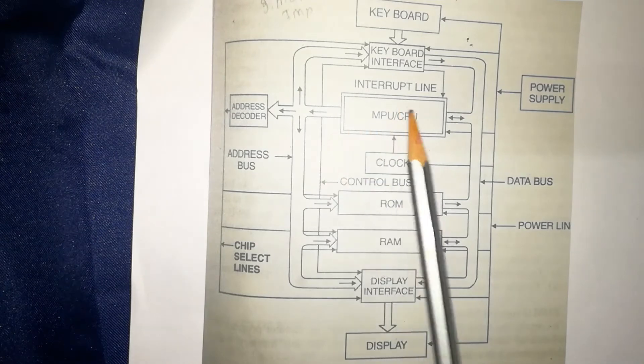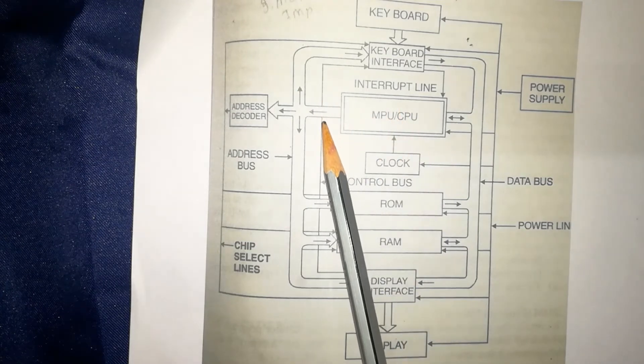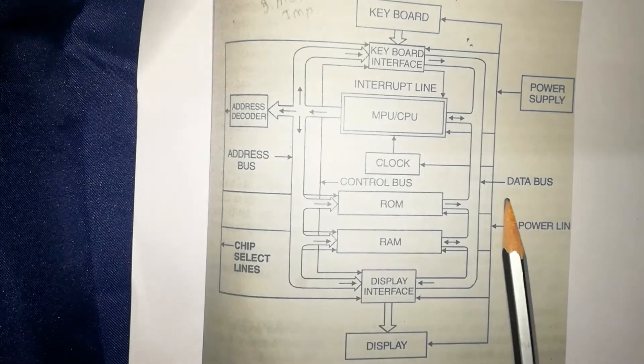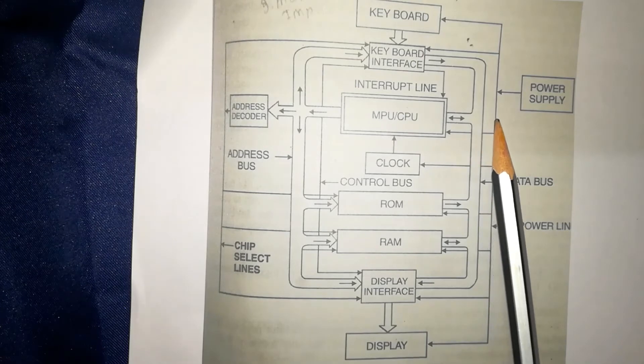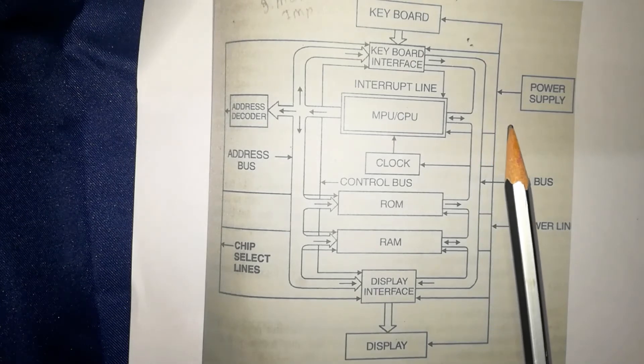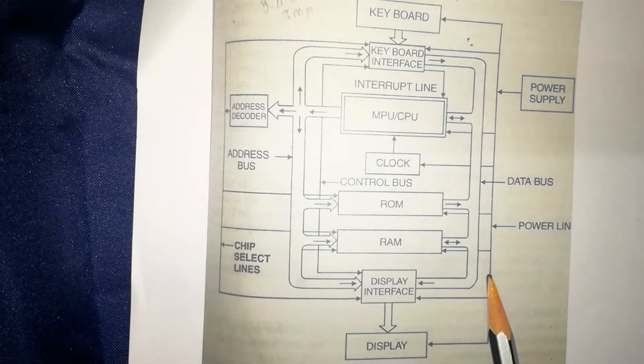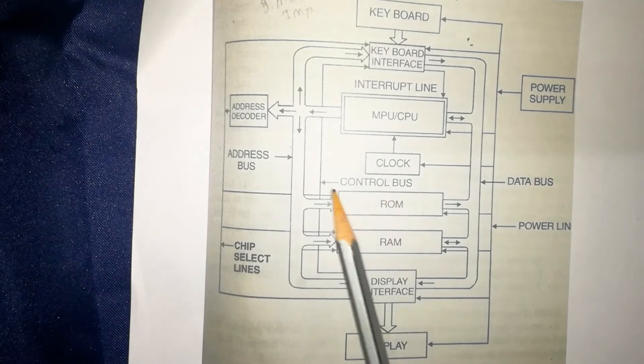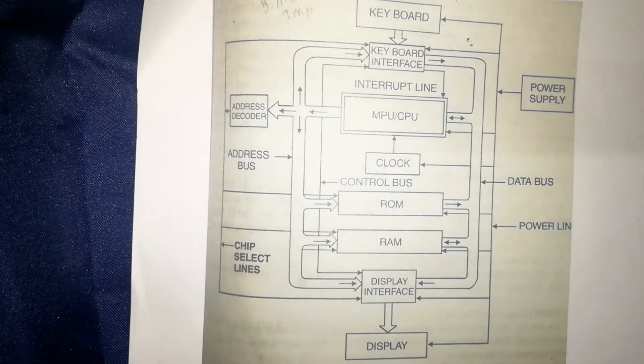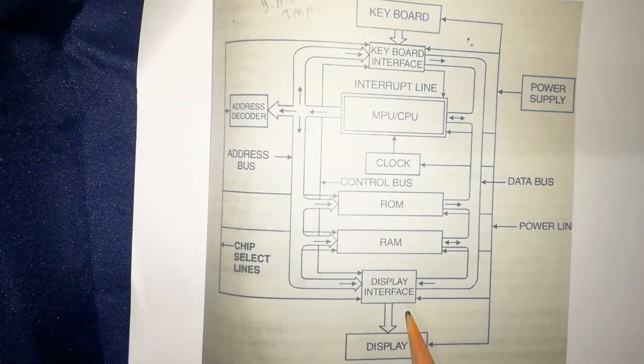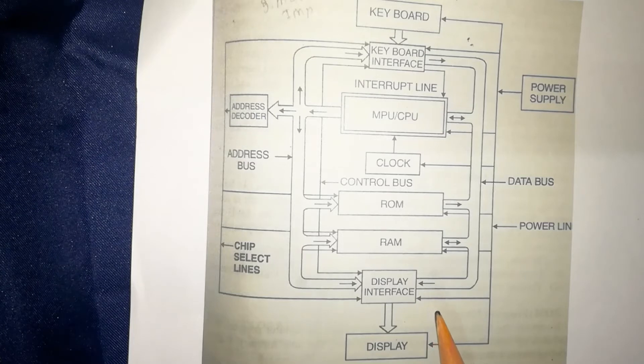Address bus is unidirectional from MPU. It sends an address of the required memory on this bus. Data bus is bidirectional. From the MPU, data can be transferred to the devices and vice versa. In control bus, control signals are carried on this bus which are generated by CPU and later transferred on this bus to drive the required block of the system.